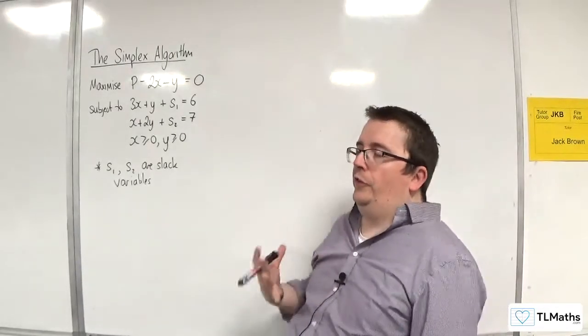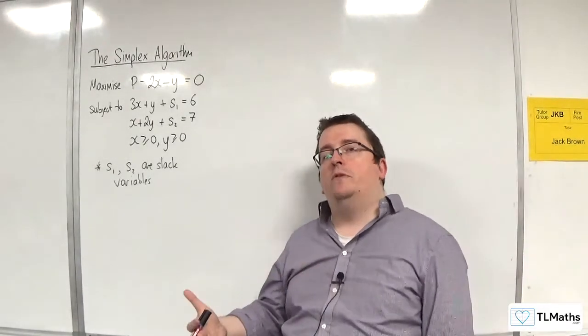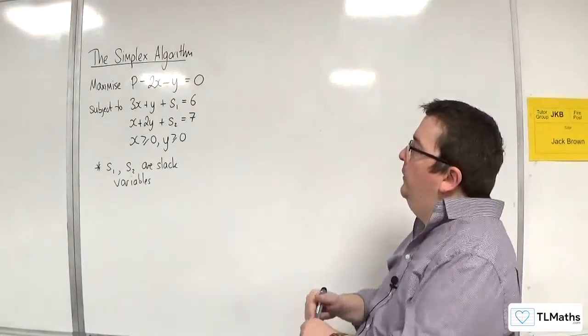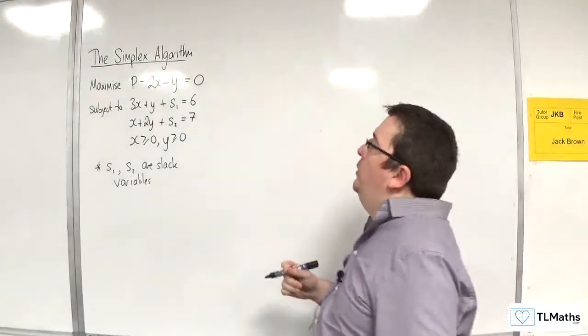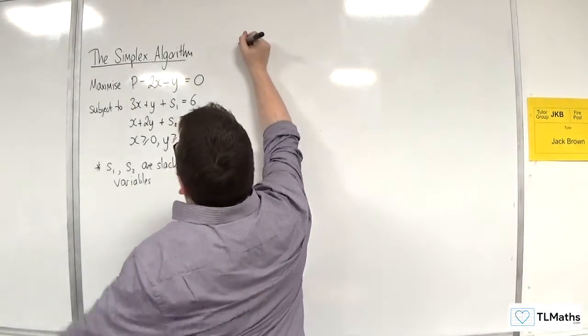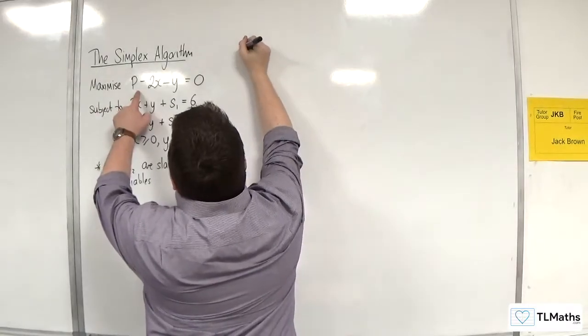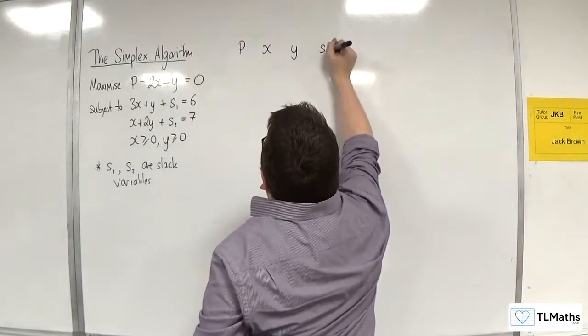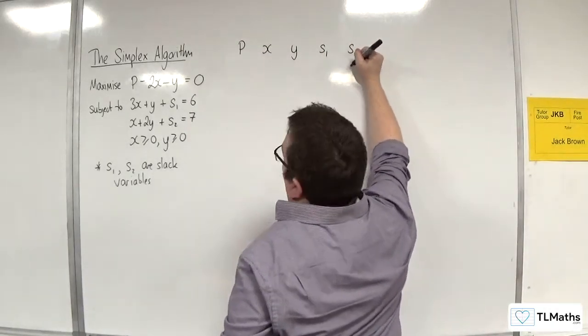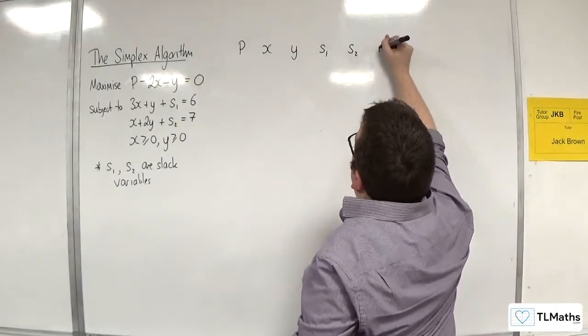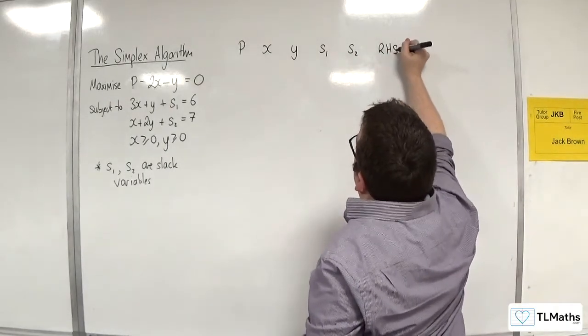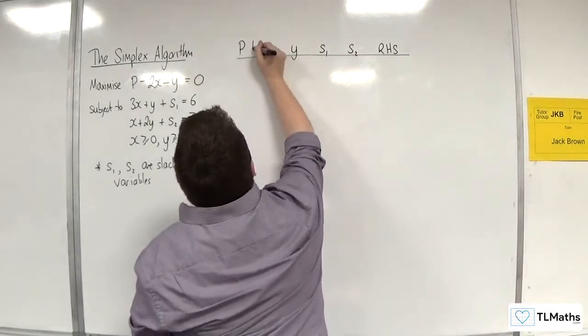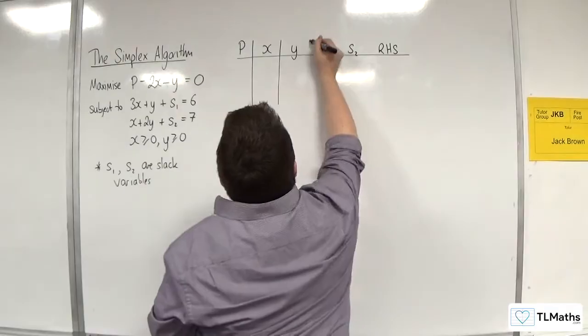Essentially, it holds the same information that we went through in the previous video, but instead it's in a table. So what we're going to do is we're going to have column headers, where we have P first, then X, then Y, then S1, and then S2, our slack variables, and then we're going to have the right-hand side. So this is at the top, and we're going to have this in a table.